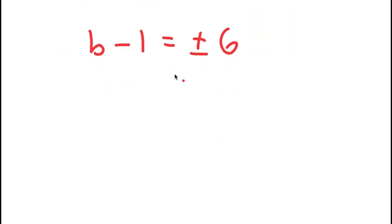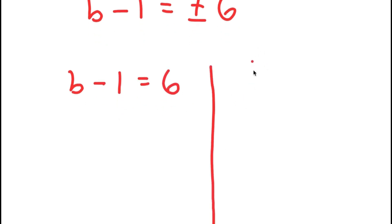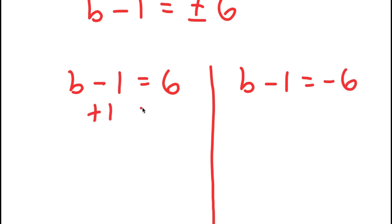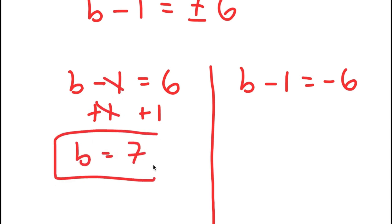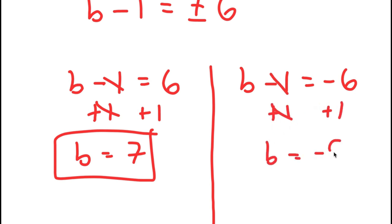This gives me two equations: B minus one equals positive six, and B minus one equals negative six. For B minus one equals positive six, I add one on both sides and get B equals seven. For B minus one equals negative six, I add one on both sides and get B equals negative five.